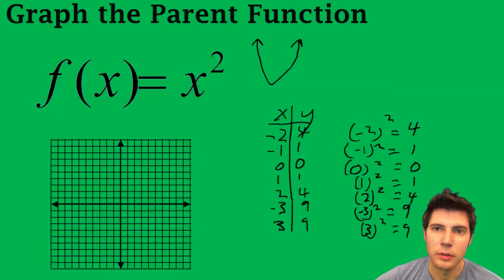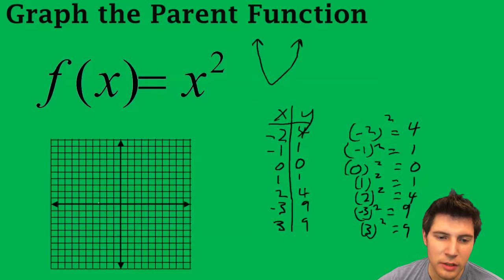So if we plot all of these points, we get negative 3, 9, negative 2, 4, negative 1, 1, 0, 0, 1, 1, 2, 4, 3, 9.